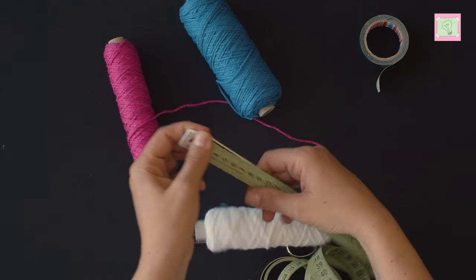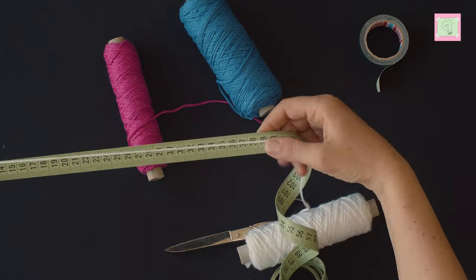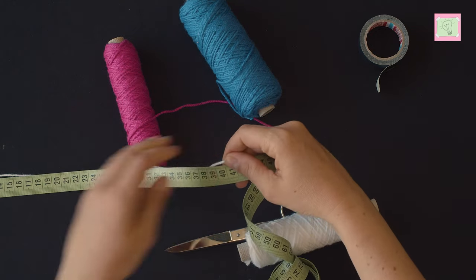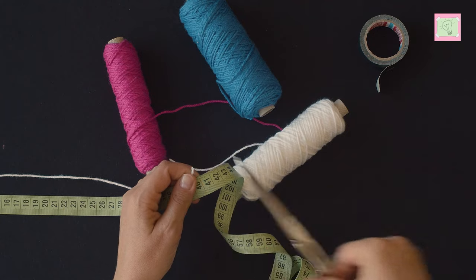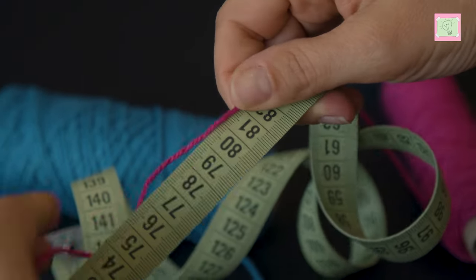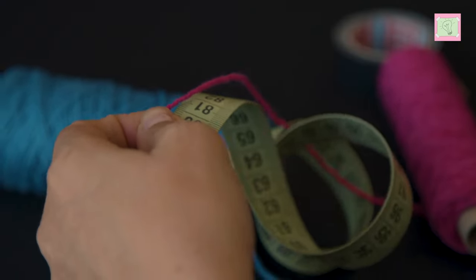One thread is in the middle that you don't see at the end. It should be about 40 centimeters or 15 inches long. The other two threads should be about 80 centimeters or 30 inches long.